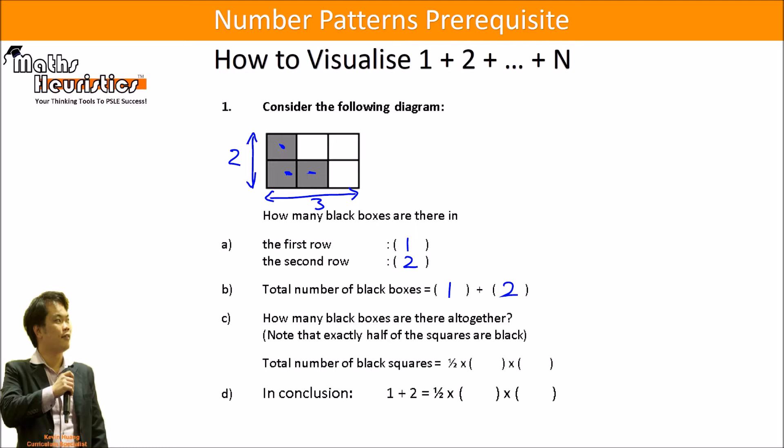So how many black boxes are there altogether? Noting that exactly half of this rectangle is shaded, we can say that it will be half times 2 times 3. So in conclusion, 1 plus 2 is equal to half times 2 times 3.